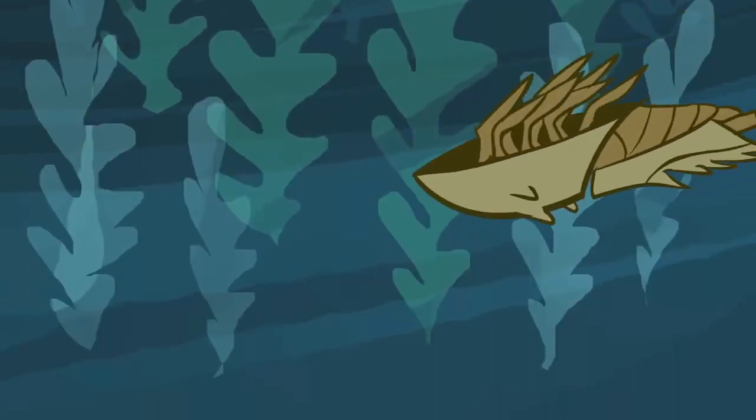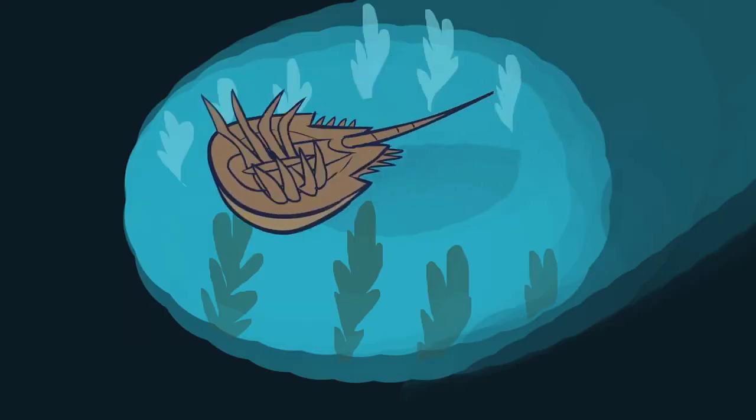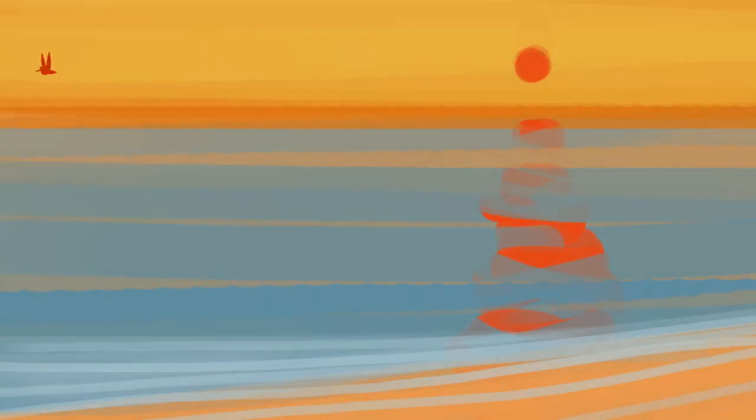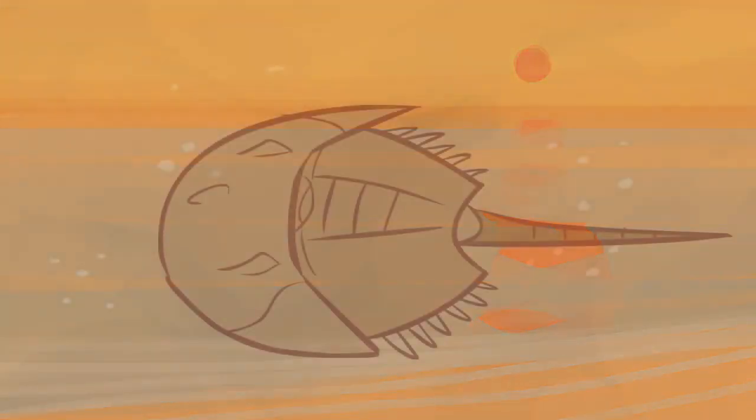Despite our best efforts, we don't know where they spend those years. Though we've spotted the occasional horseshoe crab as deep as 200 meters below the ocean's surface, we only see large groups of adults when they come ashore to spawn.